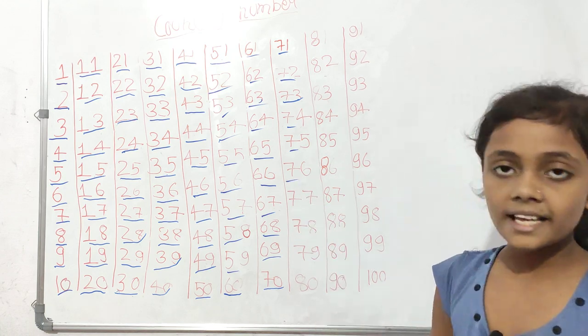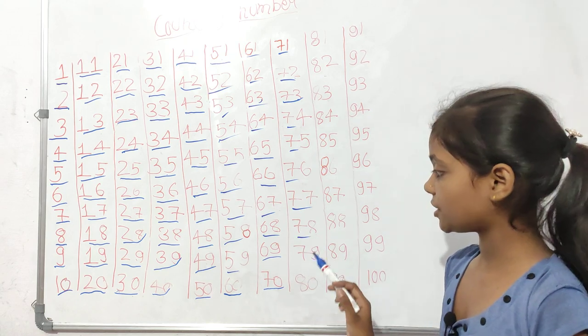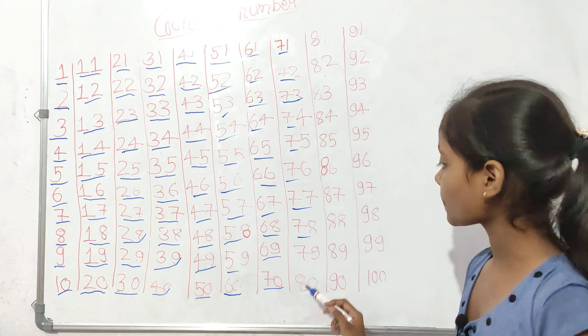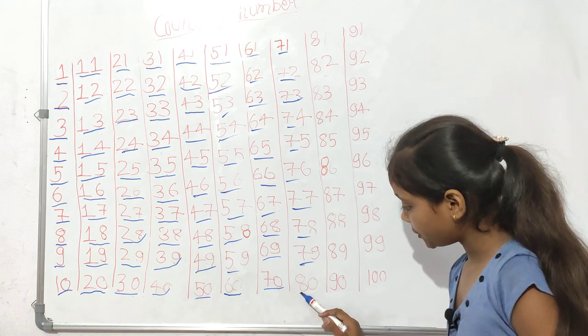Seventy-six, seventy-seven, seventy-eight, seventy-nine, eight zero, eighty.